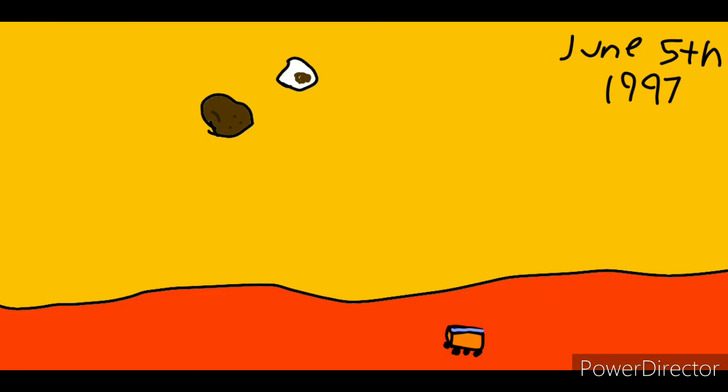June 4, 1997, the 2001 Mars Odyssey landed on the surface of Mars and became the first Mars rover.